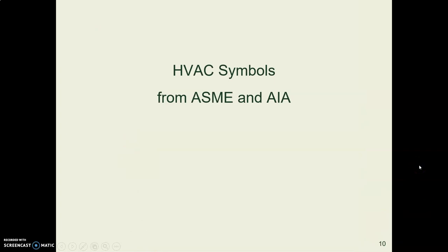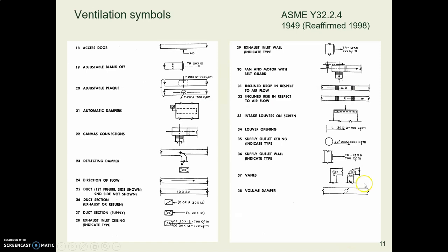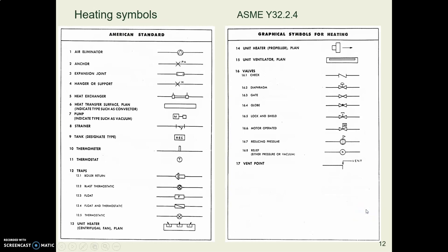That's all we need for our assignment. For your reference, I've put some other tables in here — maybe more than you need. Here are some tables from the ASME standard. Notice where it's talking about convection heating using things like hot water. Here's that bowtie symbol again that we saw back when we were talking about plumbing — bowtie equals valve.